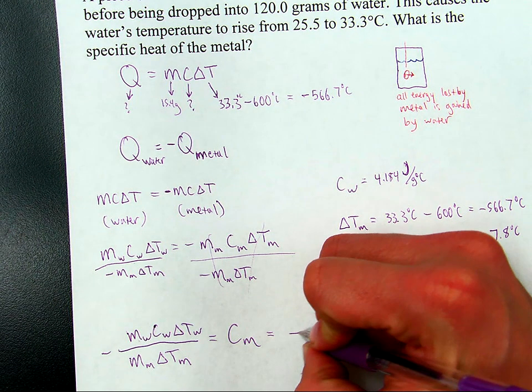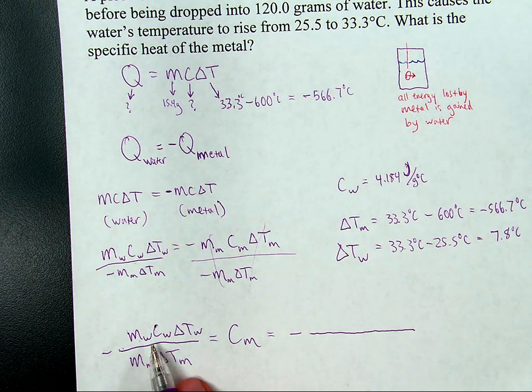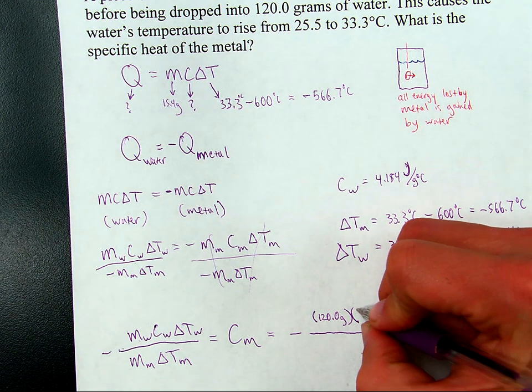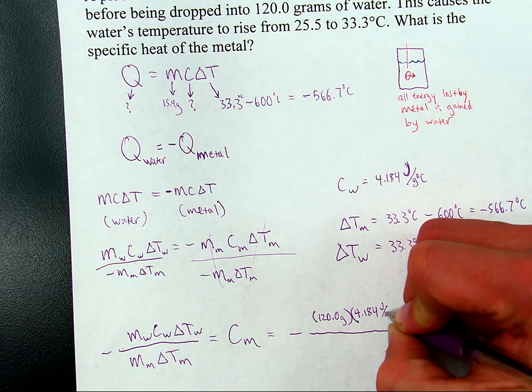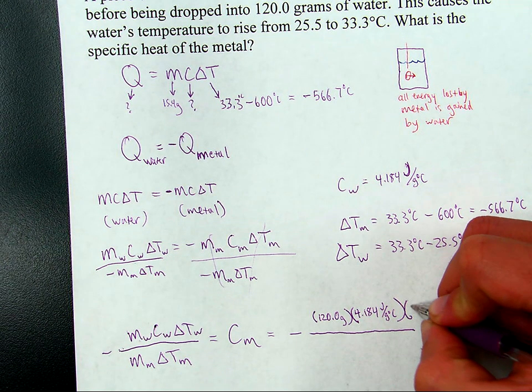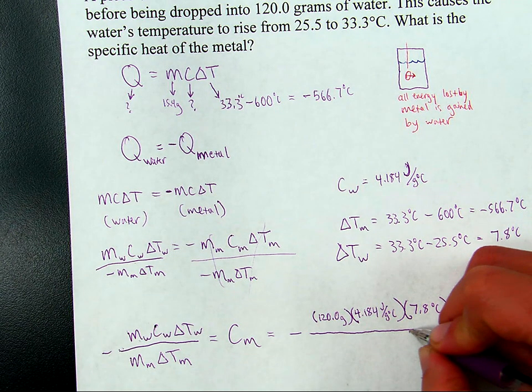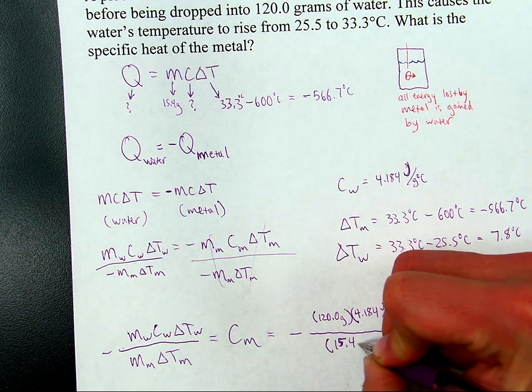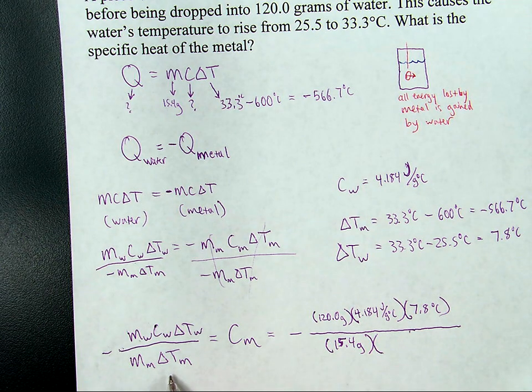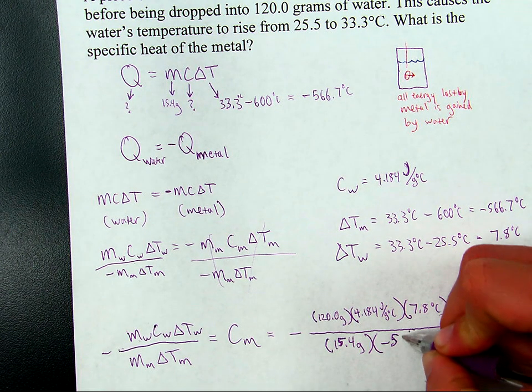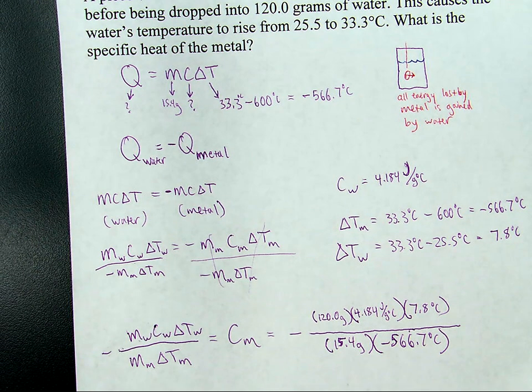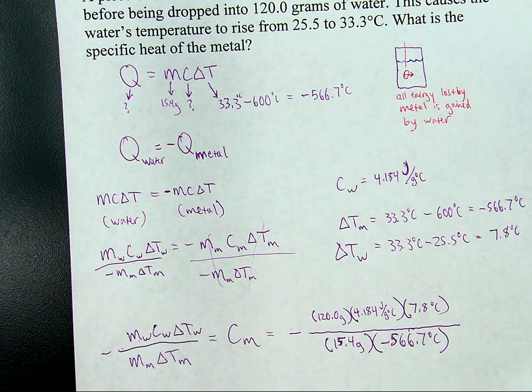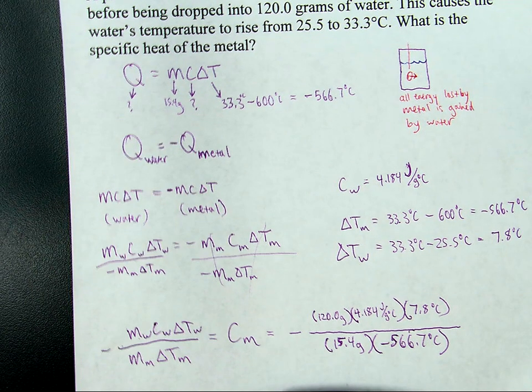So I'll just do it over here, the negative sign and then the whole expression. So mass of water is 120.0 grams. Specific heat of water is 4.184 joules per gram degree Celsius. Delta T for water is 7.8 degrees Celsius. That's the whole top part. Bottom part, you need mass of metal and delta T of metal. So mass of metal is 15.4 grams. And then change in temperature for the metal, calculated up here, negative 566.7 degrees Celsius. By the way, you may notice, this negative sign is going to cancel with this other negative sign. You're going to get a positive answer here.